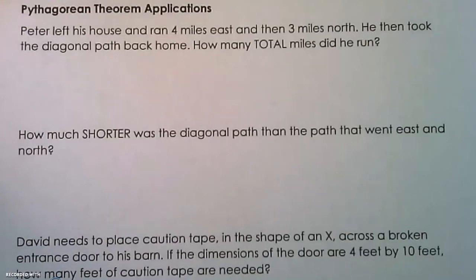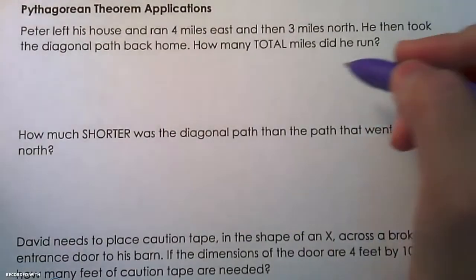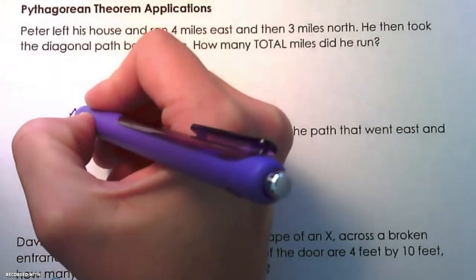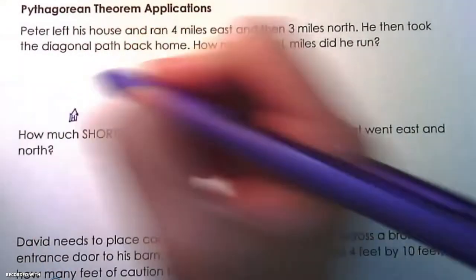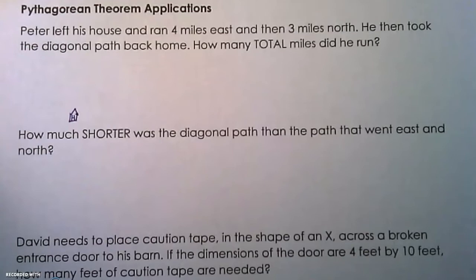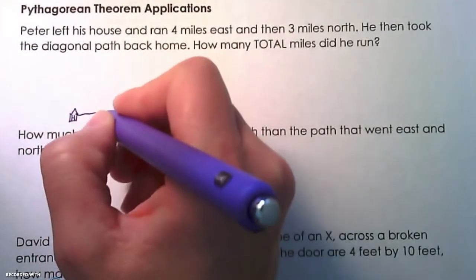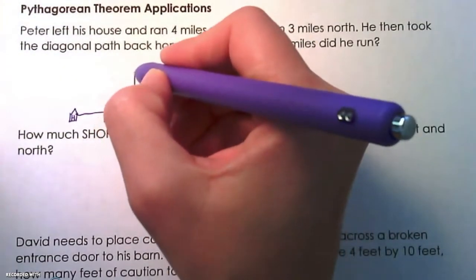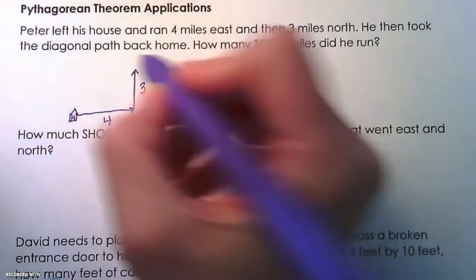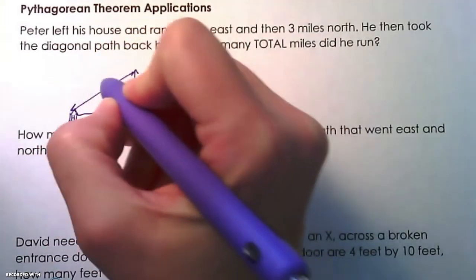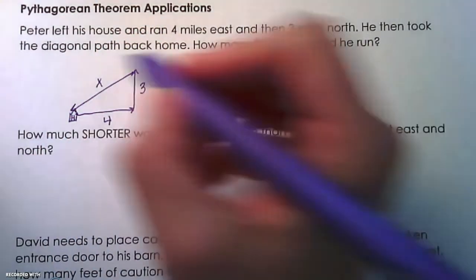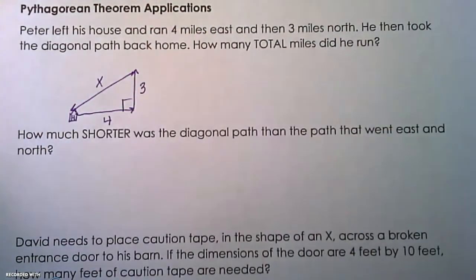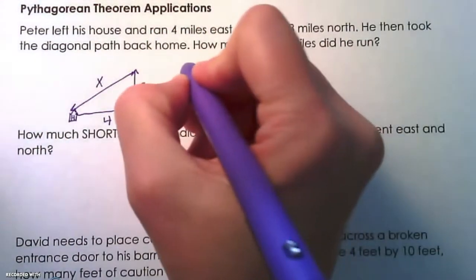A great strategy any time we are working with an application problem is to draw a picture. So Peter left his house — we'll say Peter's house is here, we'll call that H. He left his house and ran four miles east, then three miles north, and then ran the diagonal path back home. That distance is what we're trying to figure out. Here's your right triangle, so we're going to set up Pythagorean theorem to solve.